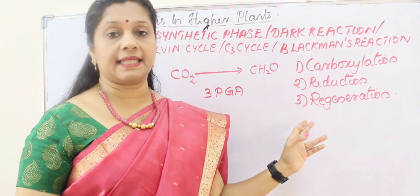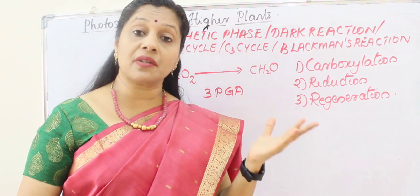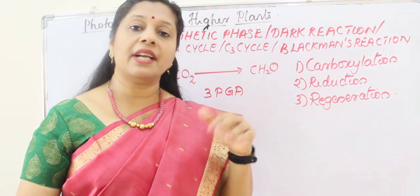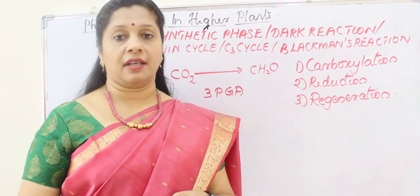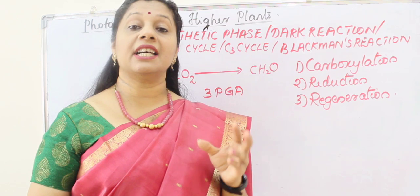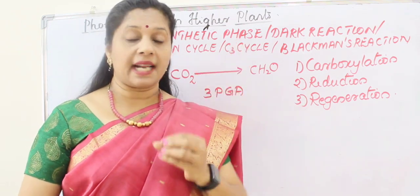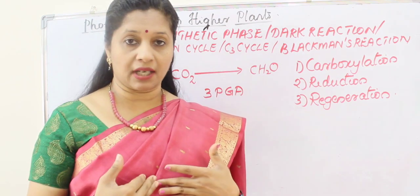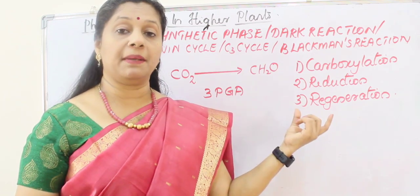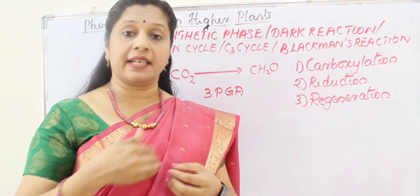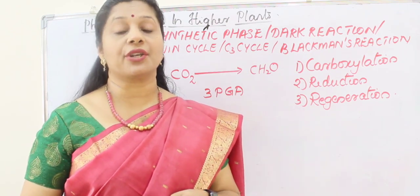The dark reaction occurs in three steps. The first step is carboxylation — just as addition of phosphorus is phosphorylation, addition of carbon dioxide is called carboxylation. The second step is reduction, where carbon dioxide is reduced to carbohydrate. There is a carbon dioxide acceptor in the plant called RUBP — ribulose bisphosphate. RUBP must be regenerated for the cycle to continue, so the third step is regeneration of RUBP.